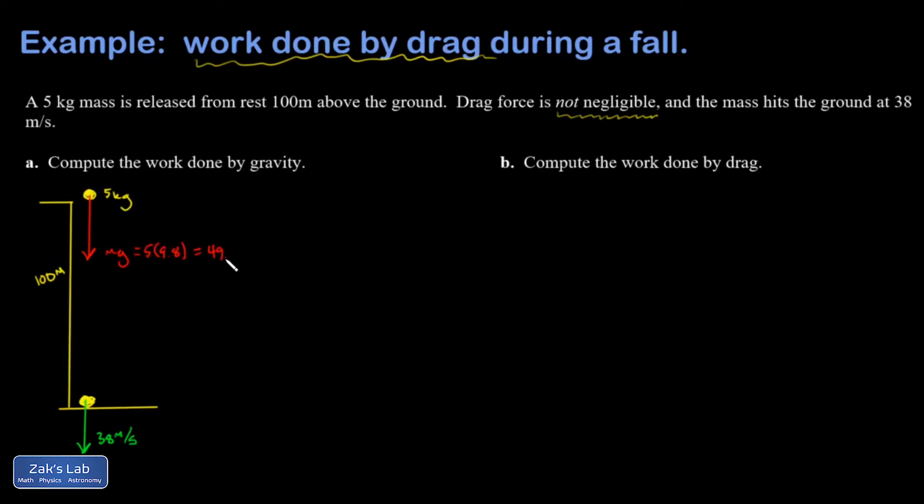That force of gravity never changes because we're near the surface of the earth. If you were to go at like one earth radius above the surface of the earth this would change, but this is very close to the surface of the earth and this is very close to a constant. So it's 49 newtons the whole way.